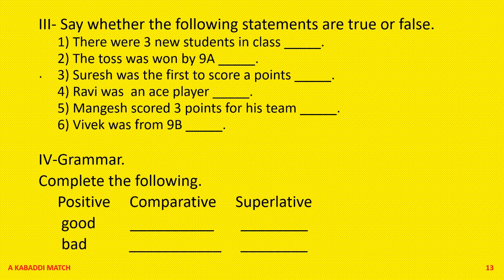Say whether the following statements are true or false. One: There were three new students in class. Two: The toss was won by 9th A. Three: Suresh was the first to score a point. Four: Ravi was an ace player. Five: Mangesh scored three points for his team, and because of that they won the match. Six: Vivek was from 9th B.